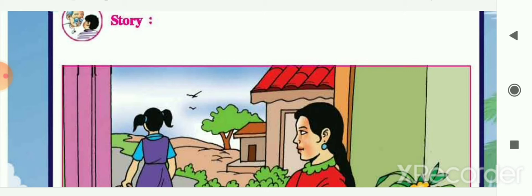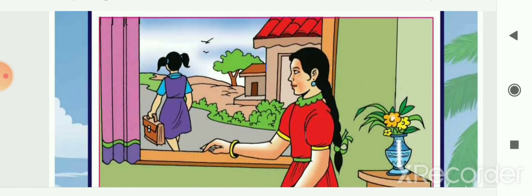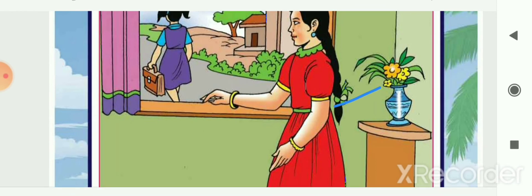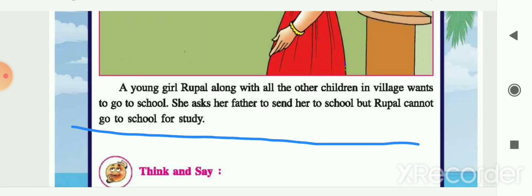Here one story is given about a girl named Rupal. As in the picture you can see one girl going to school, and another girl looking from the window of her house — that girl is Rupal. A young girl along with all the other children in the village wants to go to school. Rupal also lives in that village and wants to go to school with the other children.